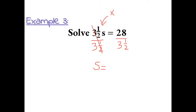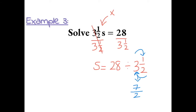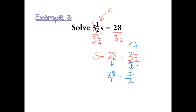Any number over itself equals 1 and cancels out, because 1 times s is just s. So we have to compute 28 divided by 3½. First, we convert 3½ to an improper fraction: 2 times 3 is 6, plus 1 is 7, and the denominator stays the same, giving us 7⁄2. We rewrite 28 as 28 over 1. When dividing fractions, we use the keep-change-flip rule: keep the first fraction, change division to multiplication, and flip the second fraction.